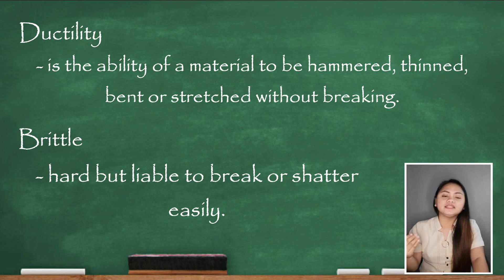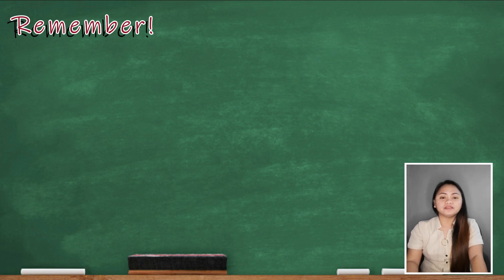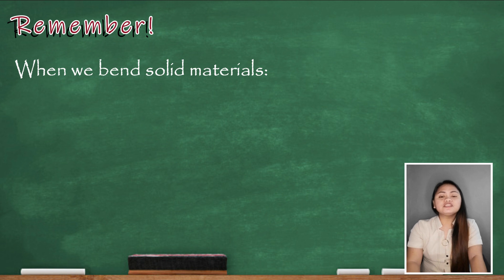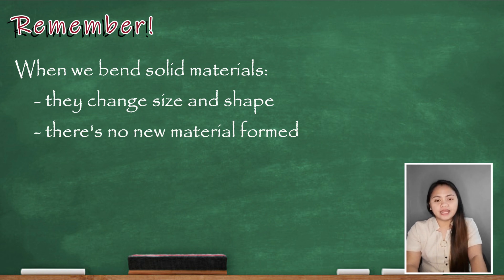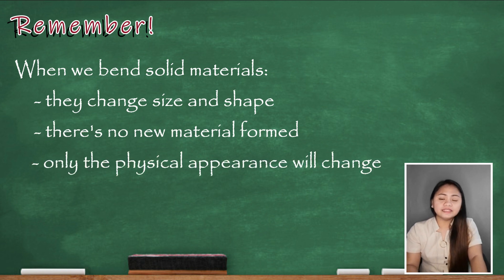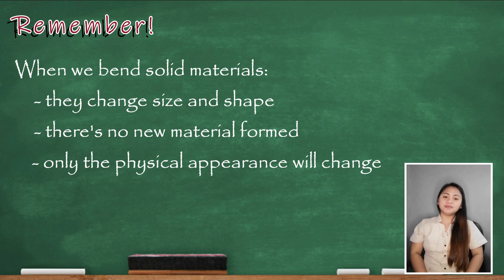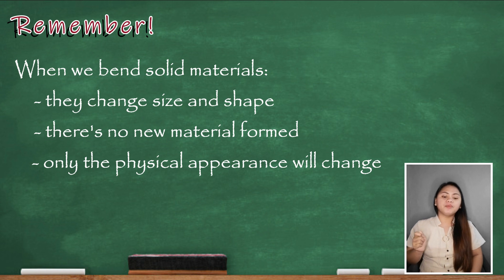We must remember that solid materials can be bent. When we bend solid materials, they may change their size and shape, but there is no new material formed — only the physical appearance of the material is changed. Bending of solid materials is applied in situations like bending steel bars or iron in industry.